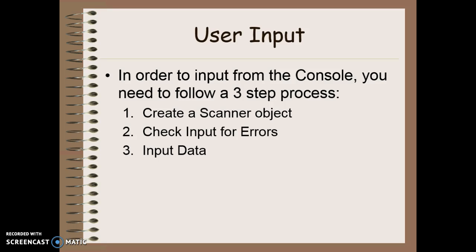So when we're going to do user input, we have to follow a simple three-step process. Step number one is to first create the scanner object that we're going to use to input our data. Then we can check any input we get from the user for errors to make sure that it's the actual data that we're looking for. Finally, we can then input the data to be used in our program.